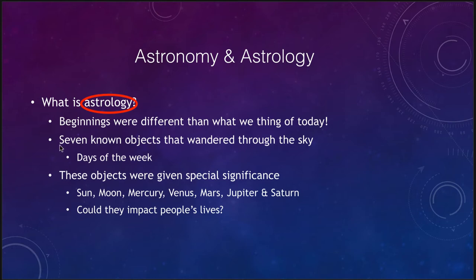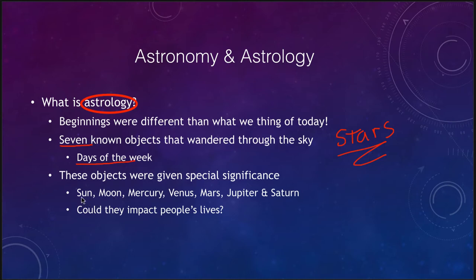There were seven known objects that wandered through the sky, separate from the stars. The stars always retained their same positions relative to each other, so the constellations were always exactly the same. However, there were seven objects that wandered through these, and these gave us our days of the week. Those objects were the sun, the moon, Mercury, Venus, Mars, Jupiter, and Saturn — the sun, the moon, and the five known planets.